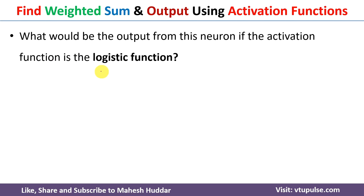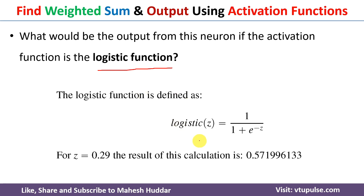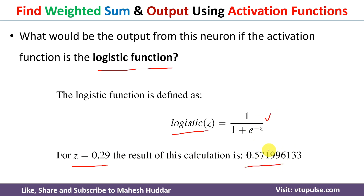Coming to the second one, known as the logistic activation function. The logistic activation function is given by the equation: 1 divided by 1 plus e raised to minus Z. Z is already calculated as 0.29. Once you put 0.29 into this equation and solve it, you will get approximately 0.57199. So this is the output using the logistic activation function.